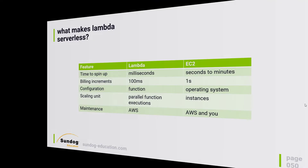So what makes Lambda serverless? At the end of the day, it is running on a server somewhere. To answer this question, let's compare Lambda to AWS's Elastic Compute Cloud, or EC2 for short. With EC2, you spin up a virtual server that you can use to do whatever you need. You might wonder why not just spin up an EC2 instance sitting there waiting for requests to run your code instead of using Lambda. Well, they're not the same thing. Let's look at how they differ between EC2 and Lambda.